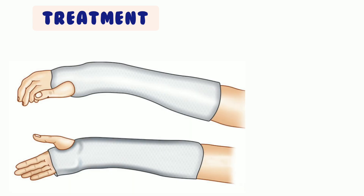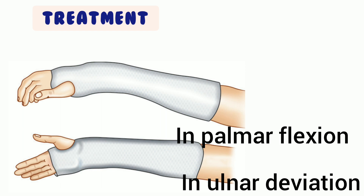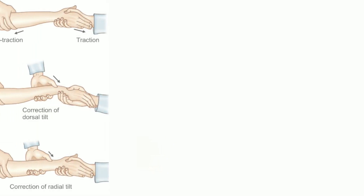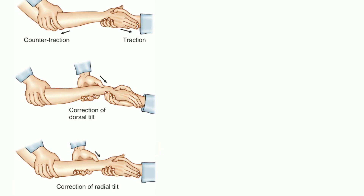Now let's see the treatment for Colles' fracture. The conservative type of treatment for undisplaced fracture is immobilization in a below-elbow plaster cast for 6 weeks. For displaced fractures, the standard method is manipulative reduction followed by immobilization in the Colles' cast. For closed manipulation, the muscles of the forearm must be relaxed either by general or regional anesthesia. The surgeon grabs the injured hand as if shaking hands. The first step is to disimpact the fragments, which have often been driven together.